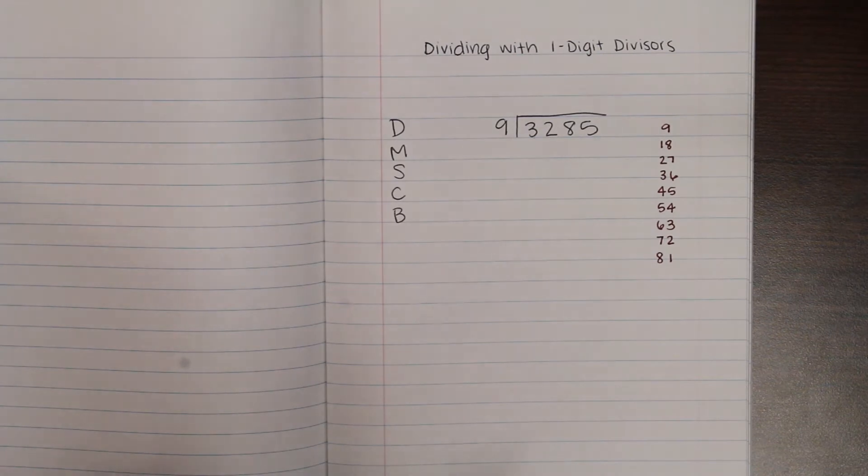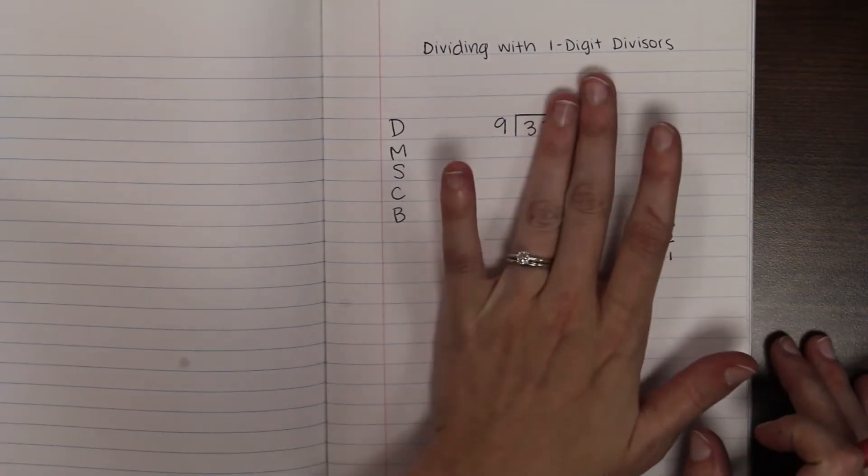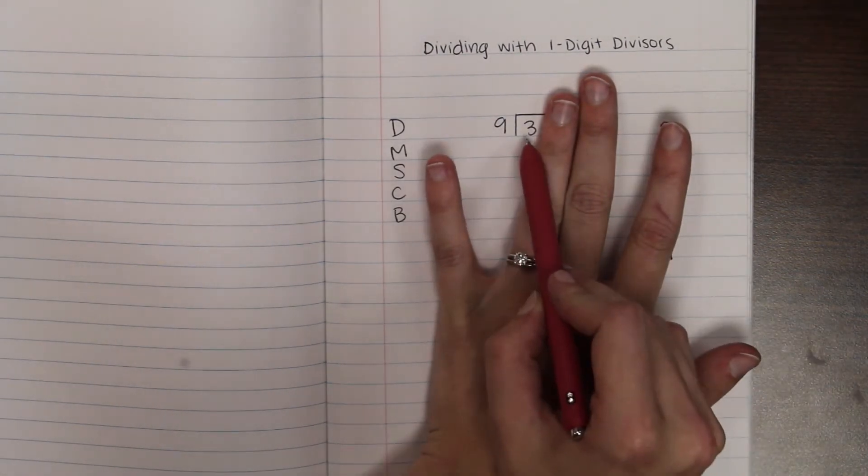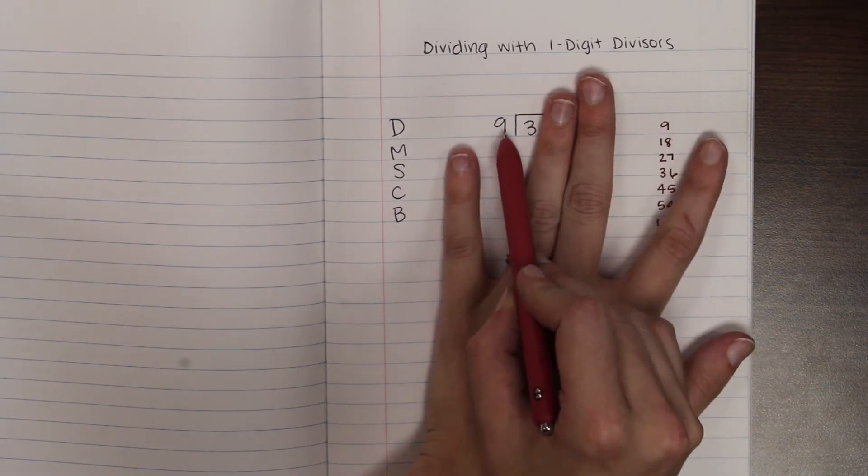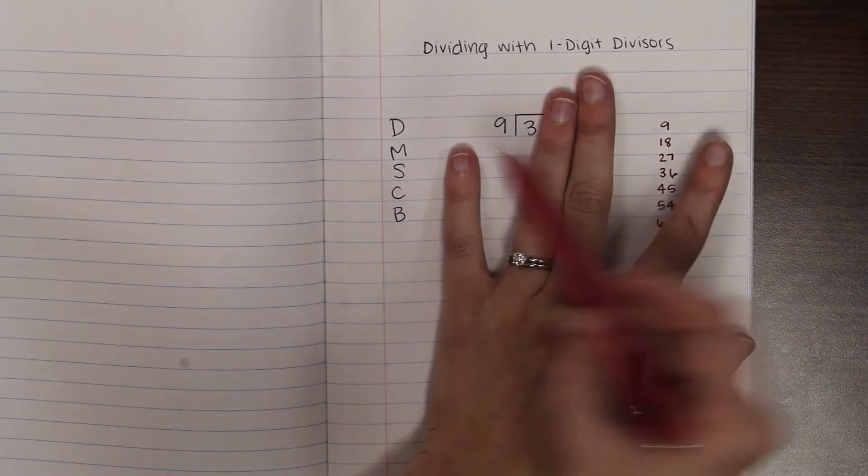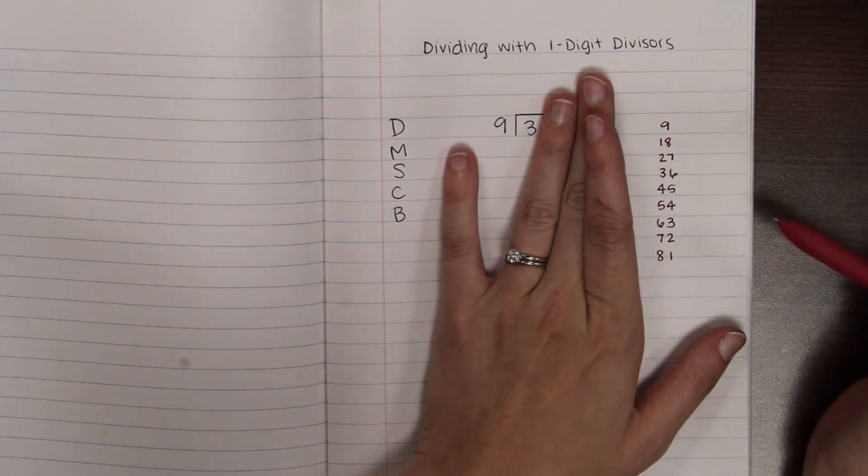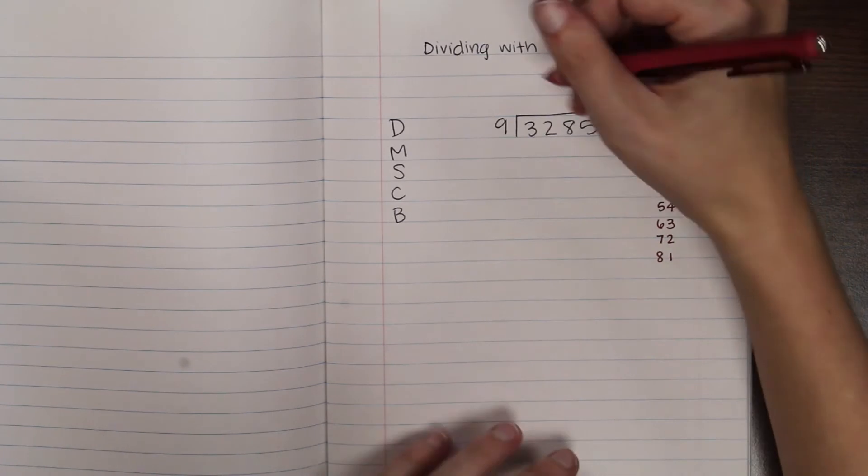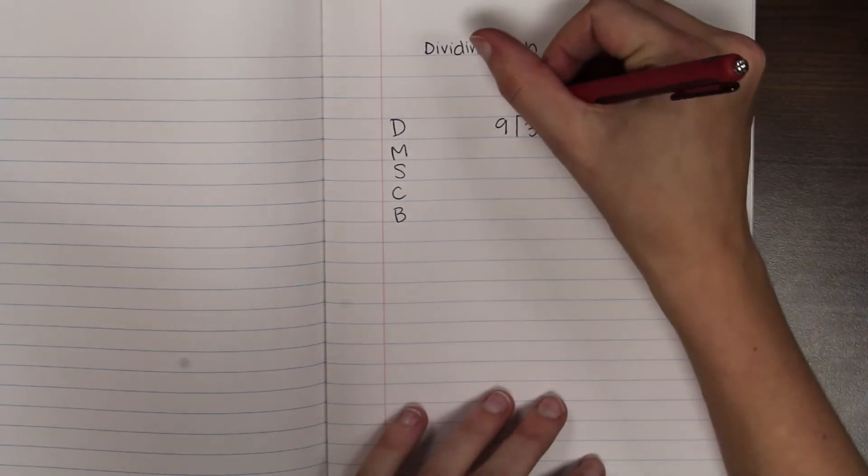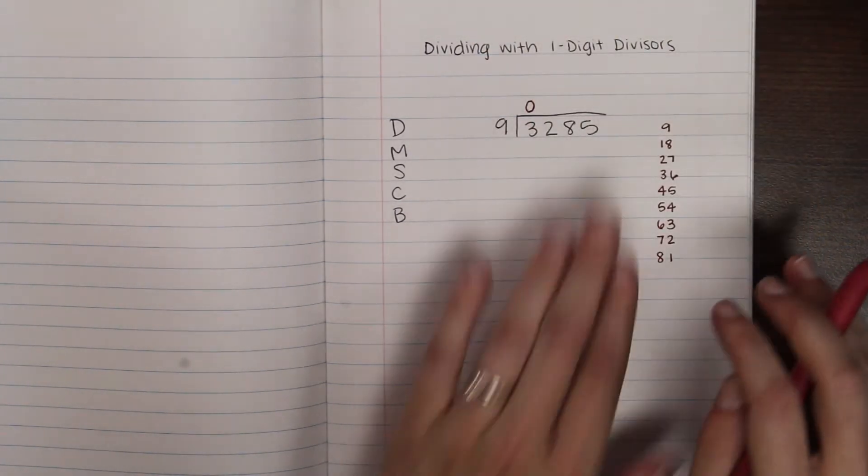So next thing I'm going to do, I'm going to kind of cover up my division problem so I'm only looking at one digit at a time. So I'm going to think how many times can 9 fit into 3? If I go over and look at my multiples of 9, all of these are larger than 3 so it's not going to fit. So on top of the 3 I'm going to put either an x or you can put a 0 because it fits in 0 times.